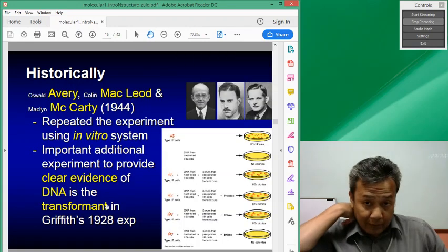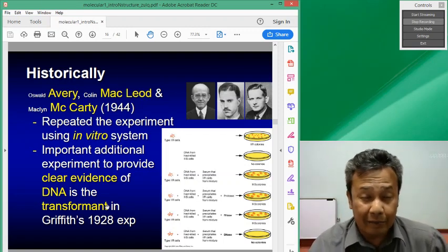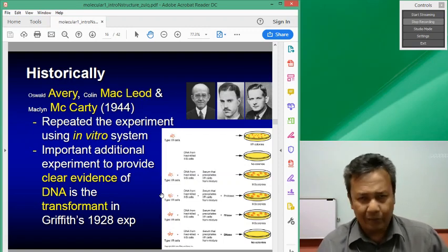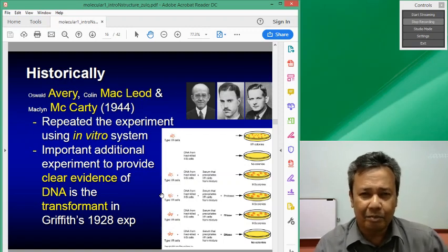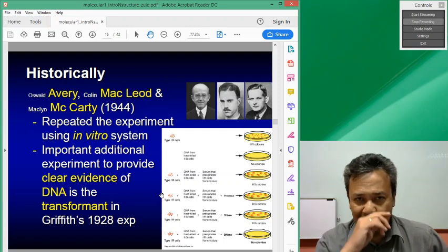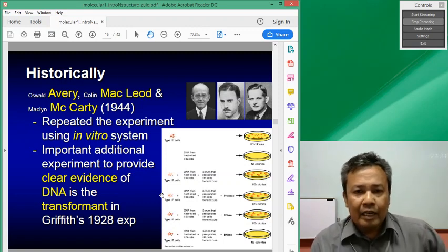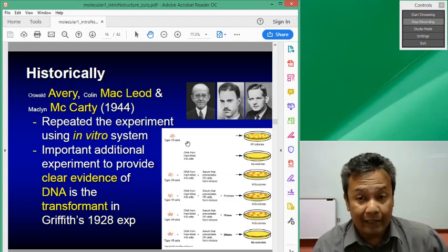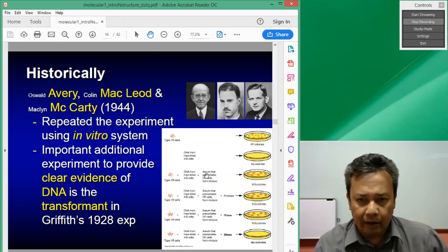This is later followed by an experiment by Avery, MacLeod and McCarty in 1944. They did sort of the same experiment, but they do it in vitro. In vitro means they do it on petri dishes and not inject them into mouse cells. They are perhaps more kind to animals from previous experiments. So what they did was they have the 2R cells and look here, you have the cells, you have the serum.